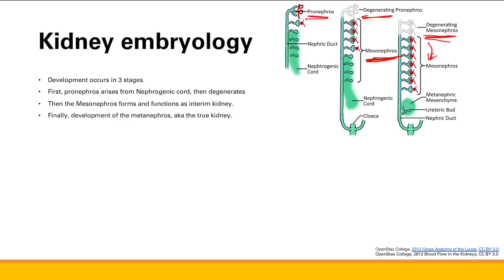Finally, you're going to get development of the metanephros, and this is going to become the true kidney — the kidney that you currently have in your abdominal area. It first starts with the development of the ureteric bud, and this ureteric bud is going to induce formation of the metanephric mesenchyme. They're both going to form and then send reciprocal signals to each other, driving respective differentiation in the structures that will make up the mature kidney.